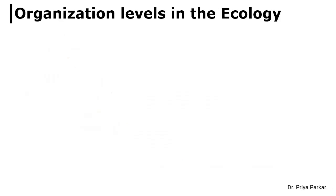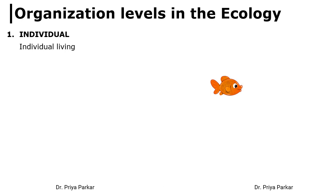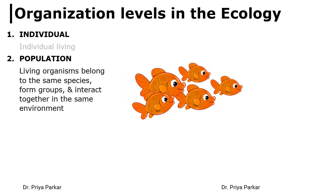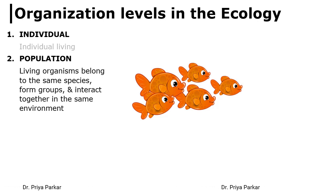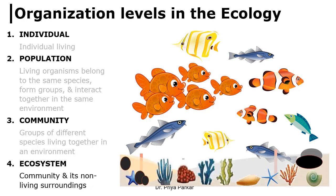In nature there are different levels of organization. Any individual species of living organism forms the basic level — it may be the fish, the butterfly, the tiger, the deer or any plant. When living organisms of the same species interact together in the same environment, they form a group called a population. Groups of different species of living organisms is known as a community. When different species of living organisms interact with each other as well as with their non-living environment, it becomes an ecosystem.